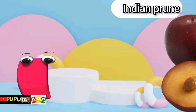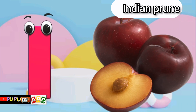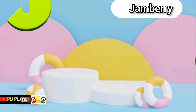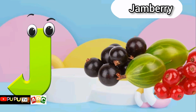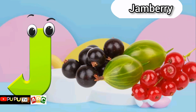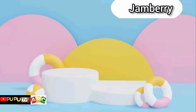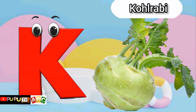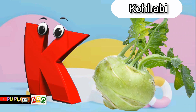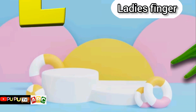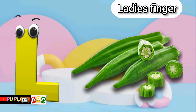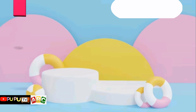I is for Indian Prune, Indian Prune. J is for Jamberry, Jamberry. K is for Kohlrabi, Kohlrabi. L is for Lady's Finger, Lady's Finger.